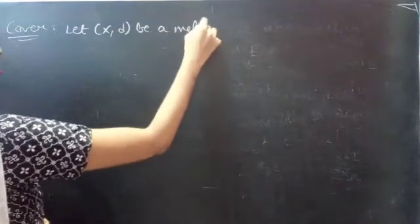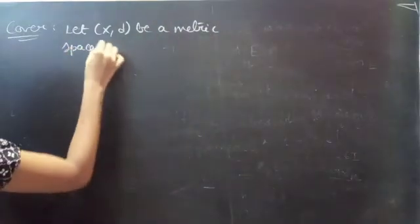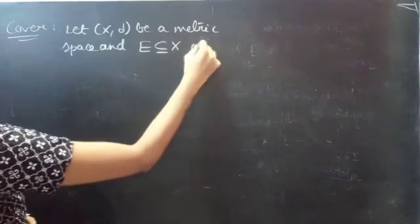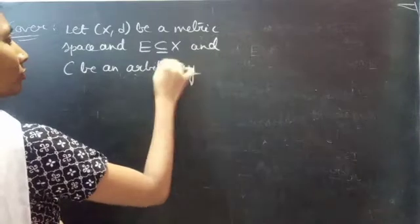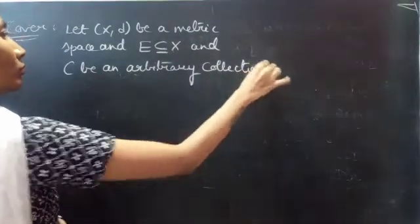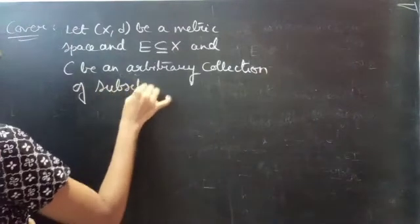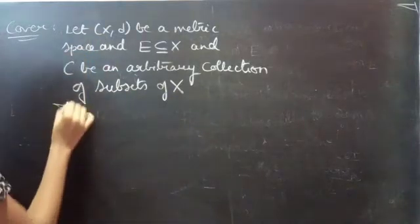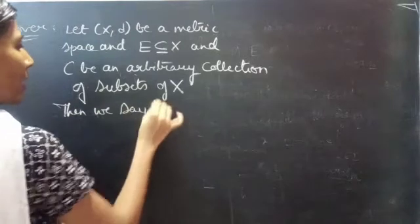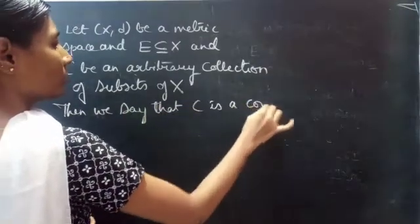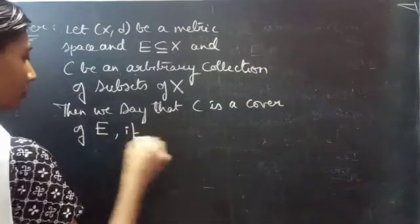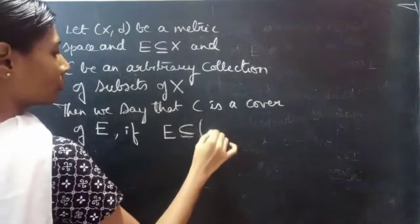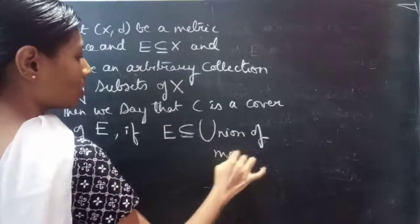Cover. Let (X, d) be a metric space, and let E be a subset of X, and C be an arbitrary collection of subsets of X. Then we say that C is a cover of E if E is a subset of the union of members of C.